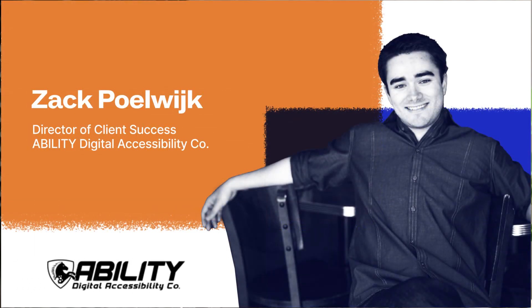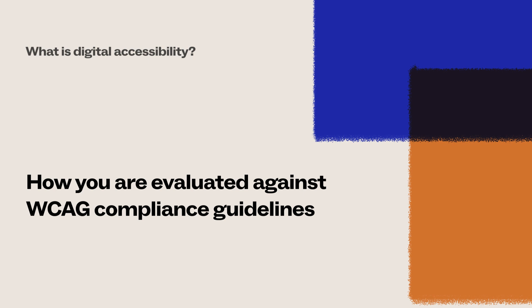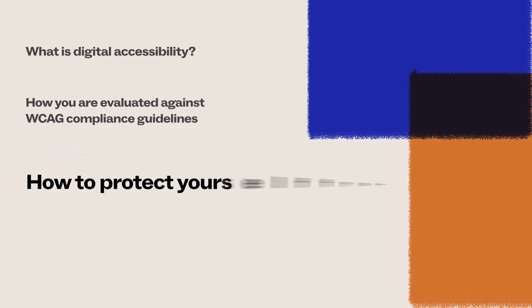Most websites fall short of this because it goes far deeper than just color contrast and text legibility. Your company could be held liable for this negligence and find itself in the crosshairs of a major lawsuit. The goal of this video is to help you deliver a better user experience to those with disabilities and avoid potential legal action. We're going to talk with Zach Polwijk, Director of Client Success at Ability, about digital accessibility, WCAG compliance guidelines, and how to protect yourself from lawsuits.